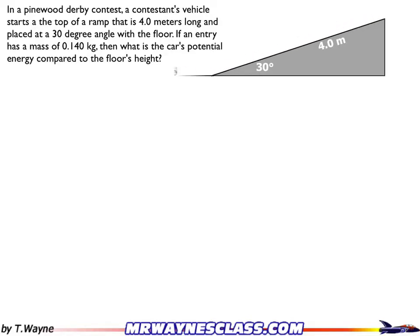This is another video solution to an example problem. In a Pinewood Derby contest, a contestant's vehicle starts at the top of a ramp that's 4 meters long and is placed at a 30 degree angle with the floor. If an entry — that is the car — has a mass of 0.140 kilograms, then what's the car's potential energy compared to the floor's height?